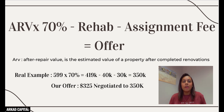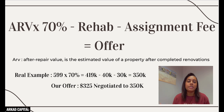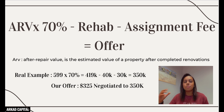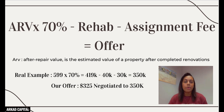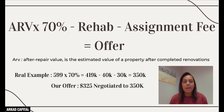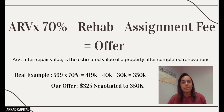Multiply ARV by 70%. That remaining 30% covers the investor's closing costs, realtor commissions, and profit. In a hot market we've seen it go up to 75–80%, but with the market cooling down, try to stay at 70%. Don't go past 80% — it's a lot harder to find a buyer. Then subtract the rehab estimate and subtract your assignment fee, which typically ranges between $10,000 and $30,000 depending on the deal.